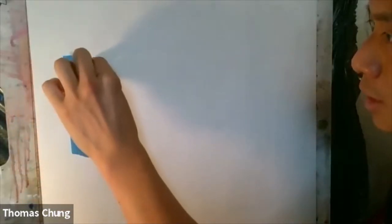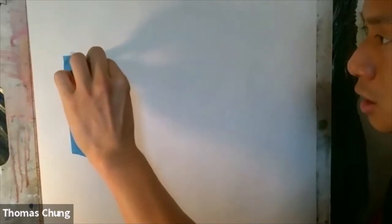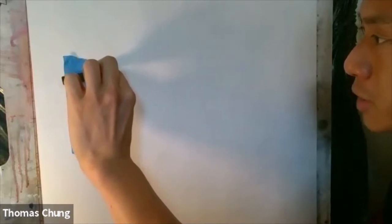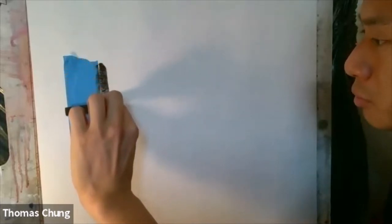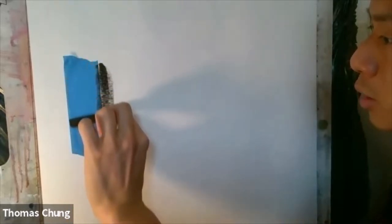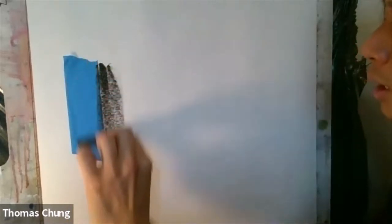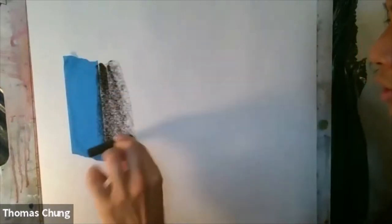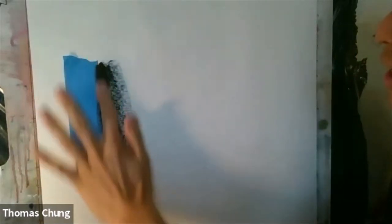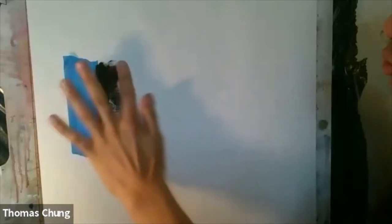So once the tape is on there, you can apply material along the edge, and I'm pressing with very firm pressure. Keep in mind when you want to go dark in a drawing, you really need to apply quite a bit of pressure. I'm going to lay down some compressed charcoal.